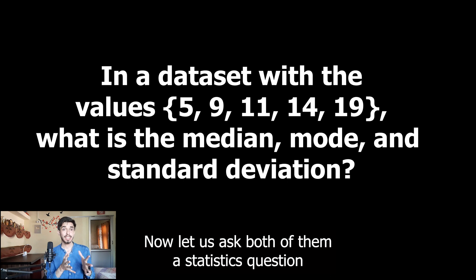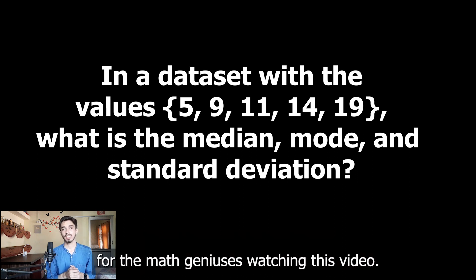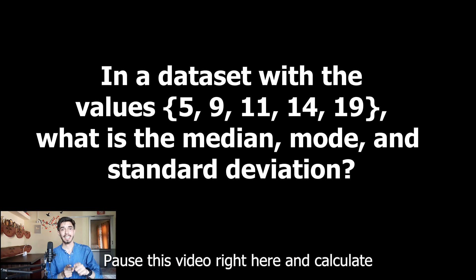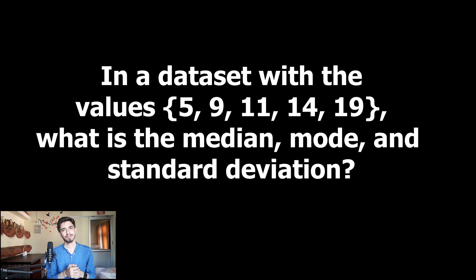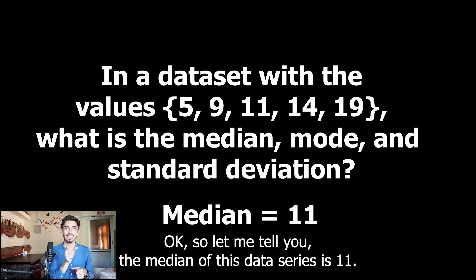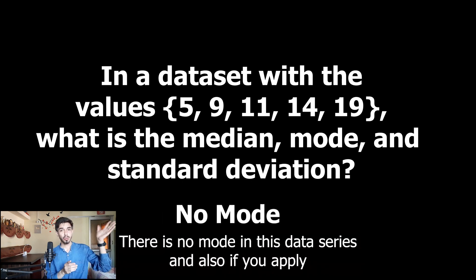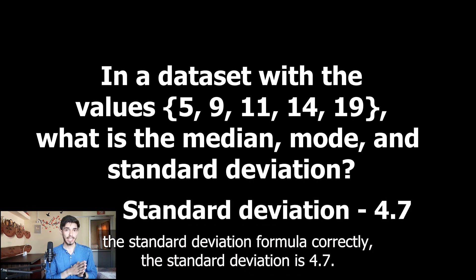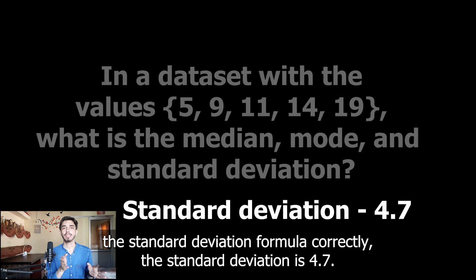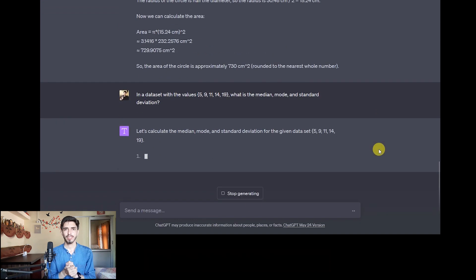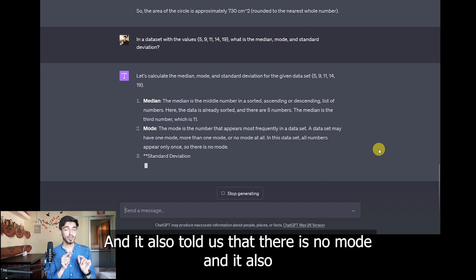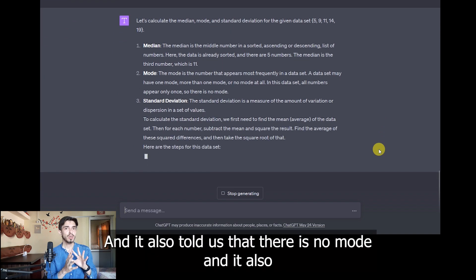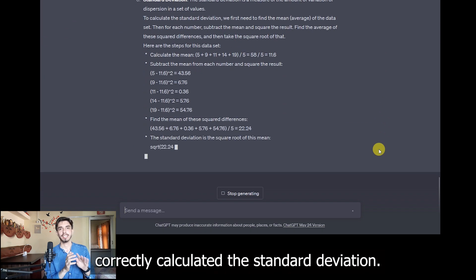Now let us ask both of them a statistics question. For the math geniuses watching, pause right here and calculate the median, mode, and standard deviation yourself. The median of this data series is 11, there is no mode, and if you apply the standard deviation formula correctly, the standard deviation is 4.7. Let us first ask ChatGPT. It gave the median correctly, it also told us there is no mode, and it also correctly calculated the standard deviation.